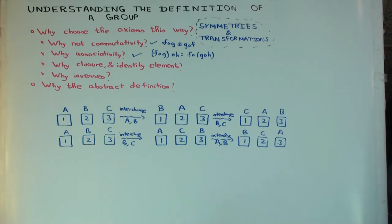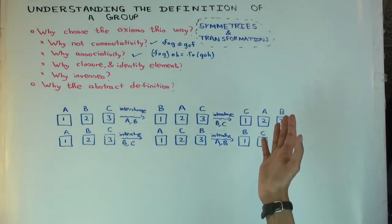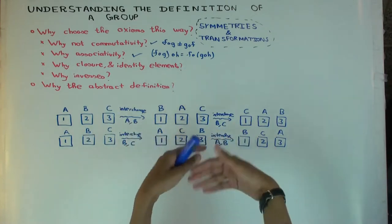Now why do we have closure — why do we assume that when you multiply two elements in the group, you get something in the group? It's saying that if you can do certain transformations, you should also be able to do any transformation you could get by doing them one after the other. If you can do some rotation and another rotation, you should also be able to do anything you get by composing those, because you're trying to capture all the symmetries of a structure.